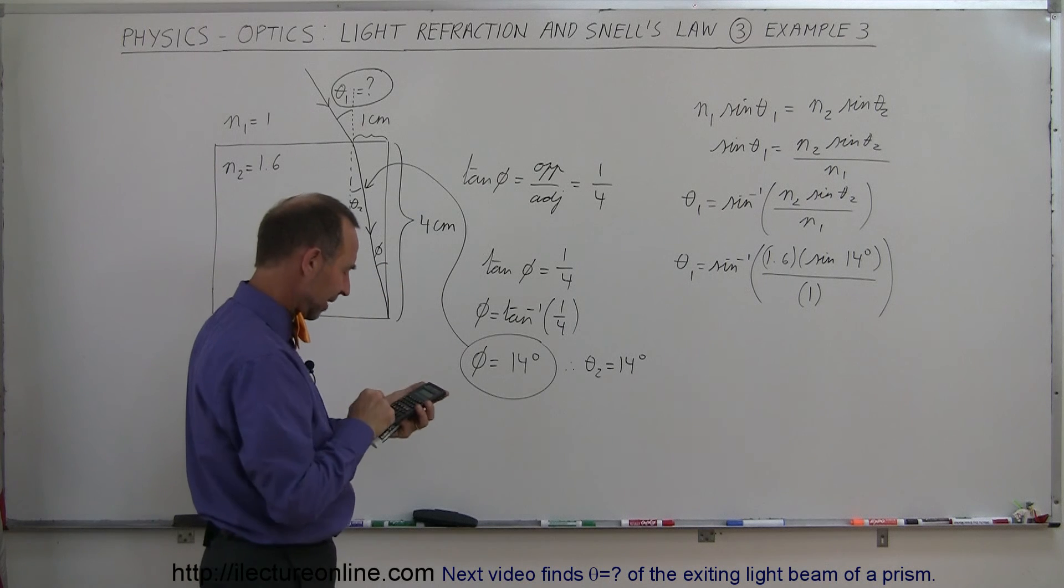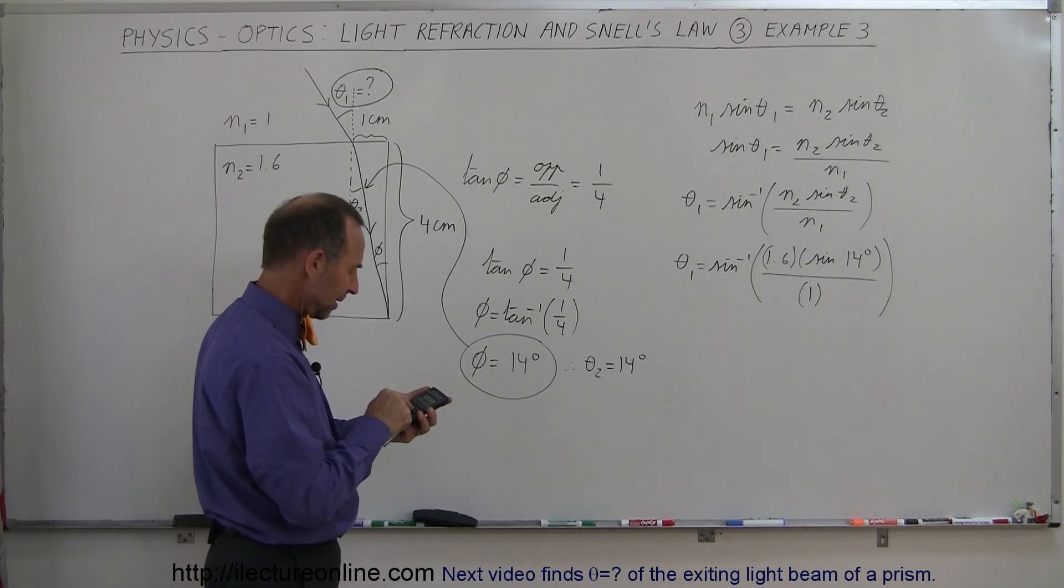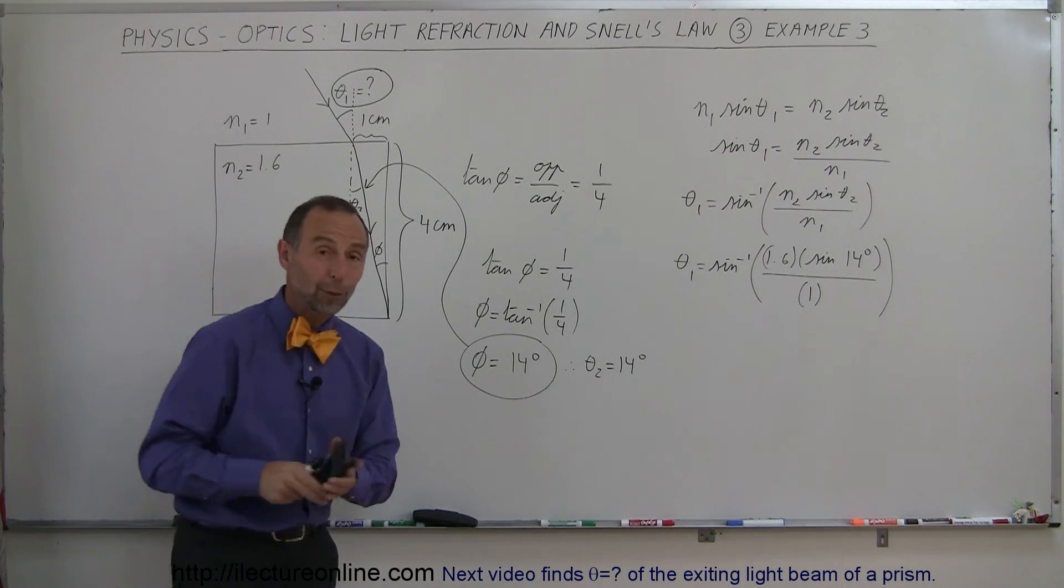So we take the sine of that, multiply it times 1.6, and we take the arctangent of that, and we get 22.8 degrees.